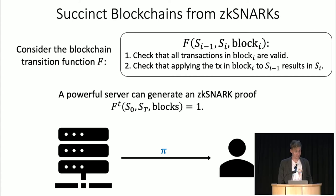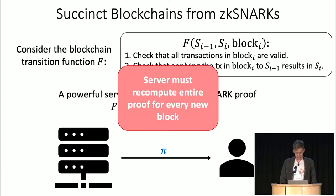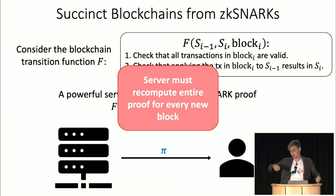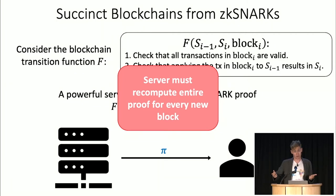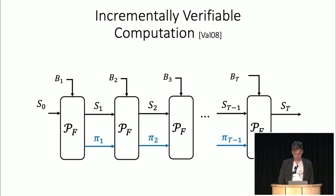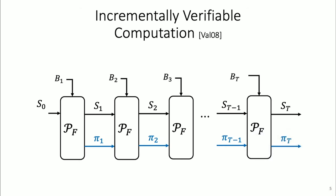The problem is that if I do this for one block and then the next block comes along, I just need to recompute the entire proof. This powerful server has to generate the proof, and then six seconds later needs to generate a new proof. It's very unlikely that on consumer hardware — if this process takes months — you can generate a new proof within six seconds. And the problem gets more and more complicated the more data the blockchain has. Luckily, there is a solution: Incremental Verifiable Computation (IVC) or recursive SNARKs.